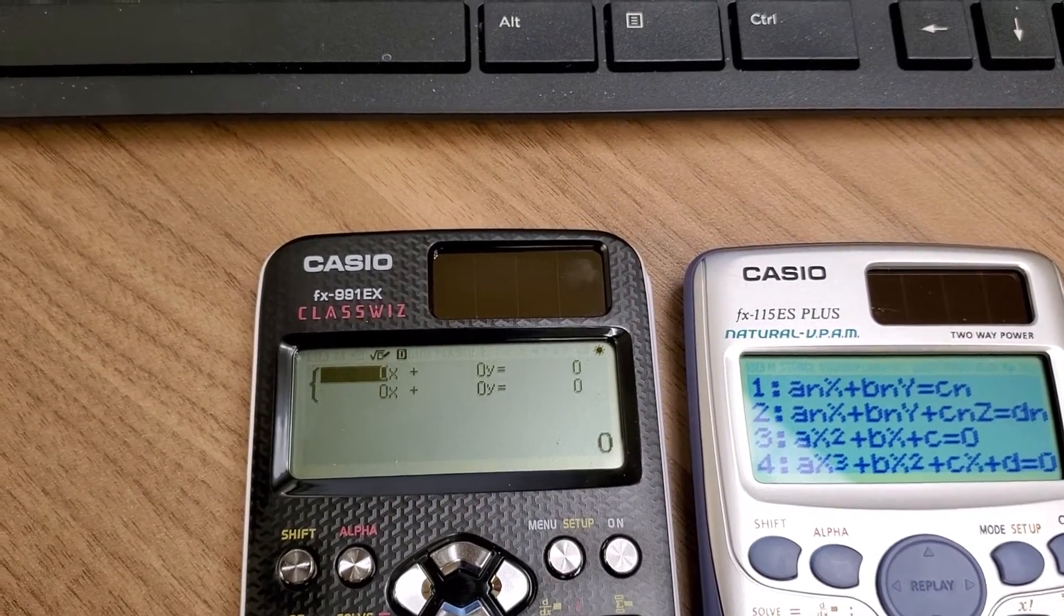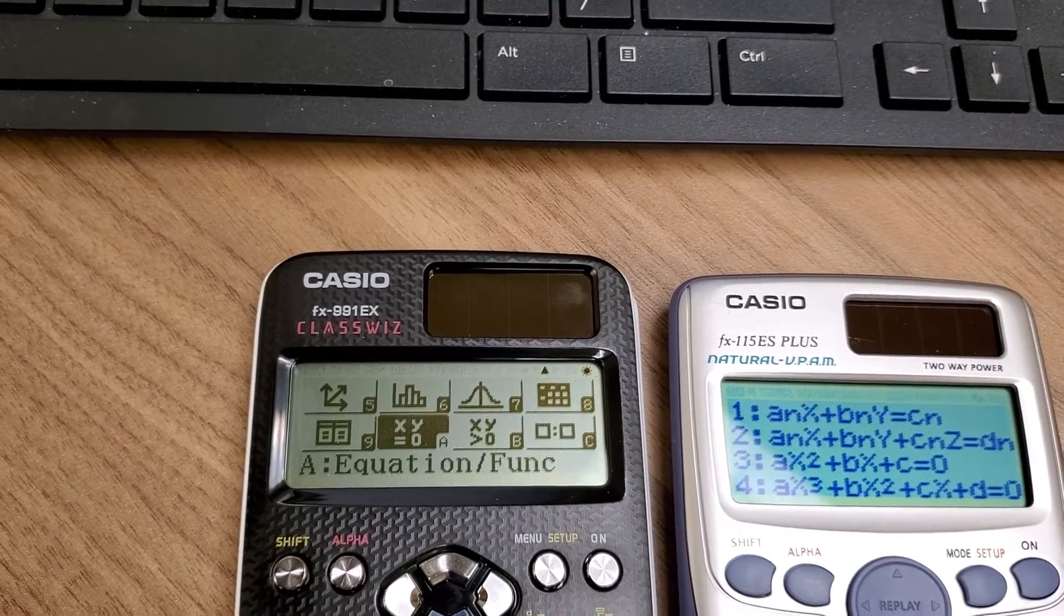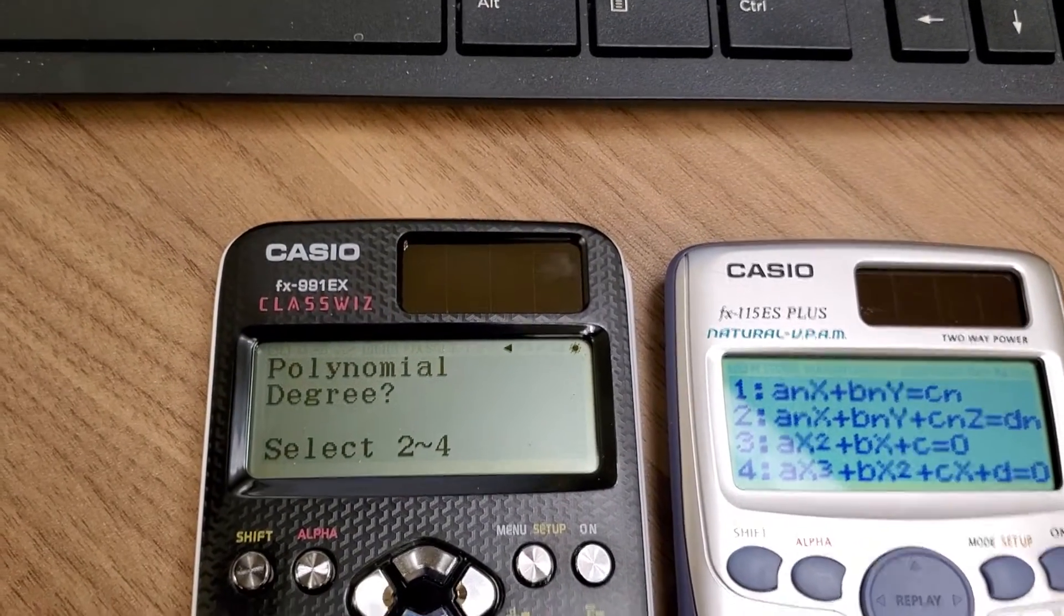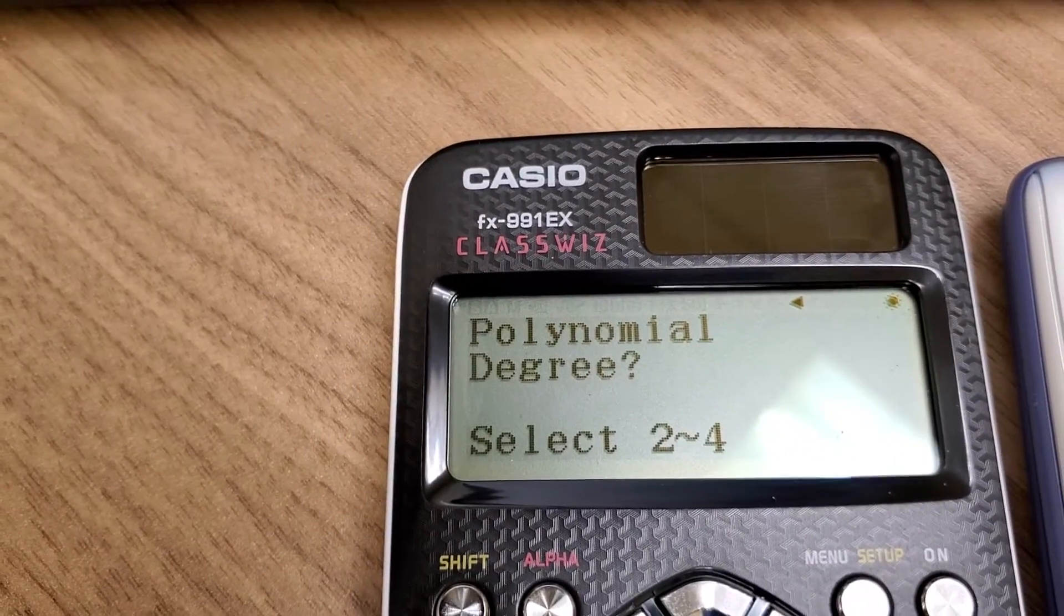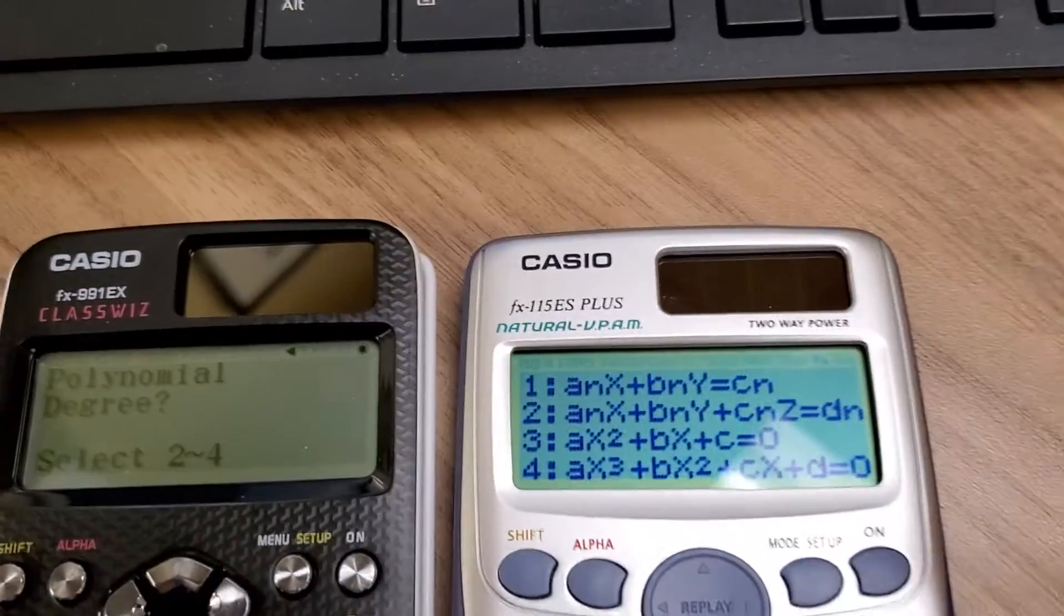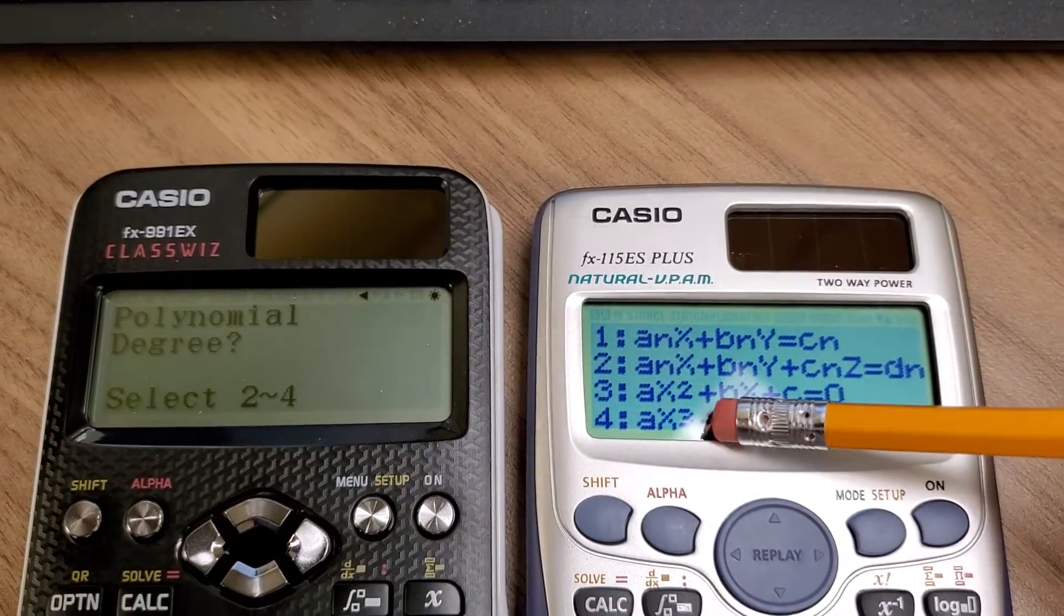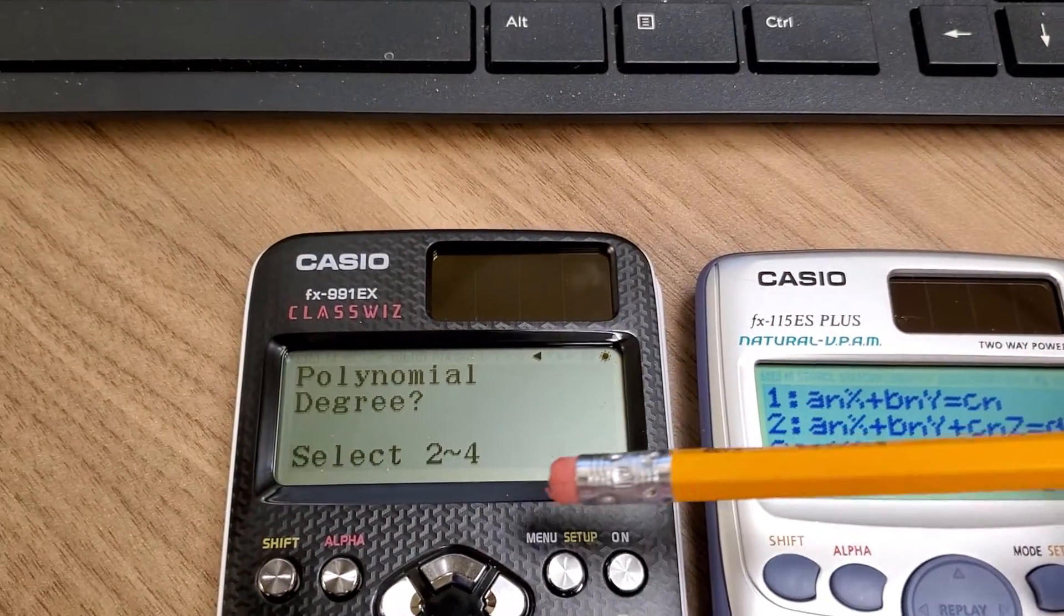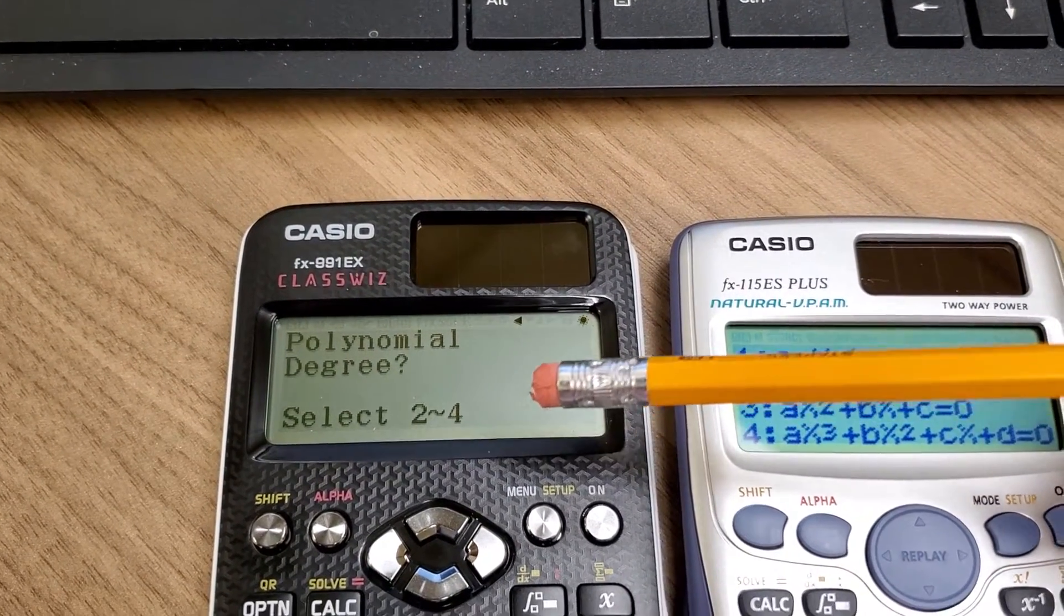If we go back—oops—delete menu. Okay, go back to the menu and choose Polynomial, you're going to notice that the ClassWiz is going to let you select the degree of your polynomial, and it can handle up to fourth-degree polynomials. On the 115ES Plus, it can only handle up to a third-degree polynomial. So you can do a quadratic or a cubic. Over here, you can do a quadratic, cubic, or quartic equation. So that's an advantage, too.